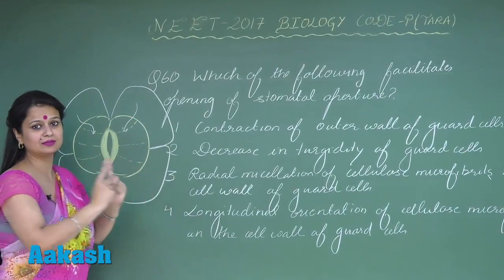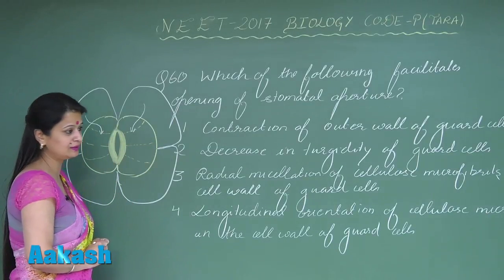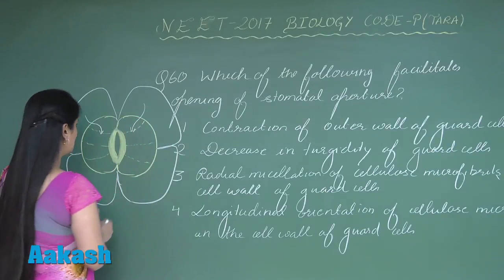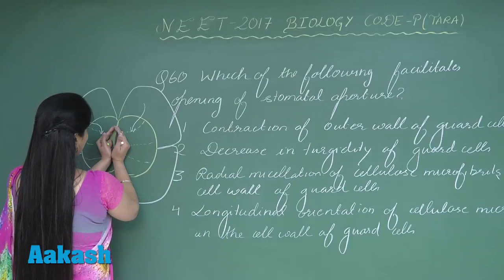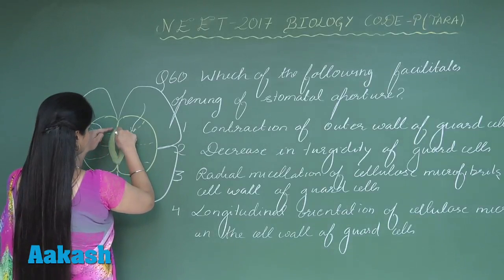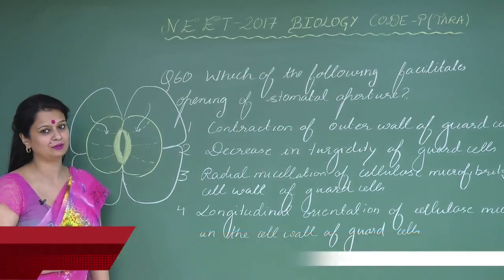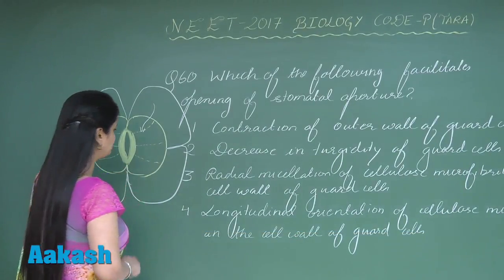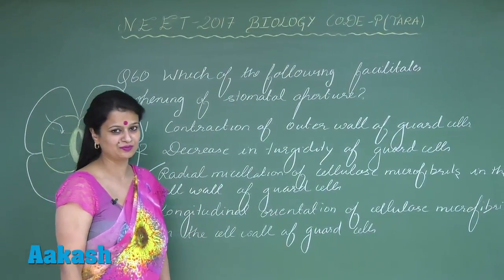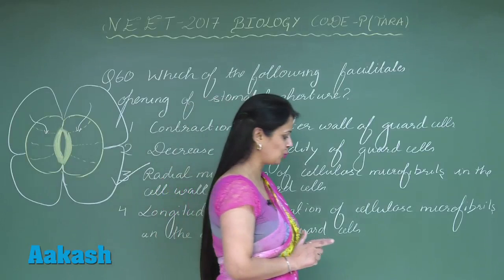They are radially orientated due to radial micellation. When the guard cell absorbs water, turgidity increases, causing the thick inner wall to move towards the outer side, forming a crescent shape, which results in the opening of the stomata. So the correct answer is radial micellation facilitates the opening of the stomata. That covers question 60; now we move to question 61.